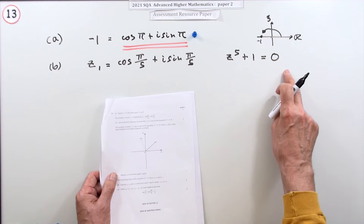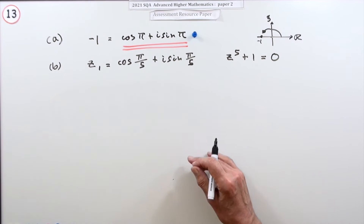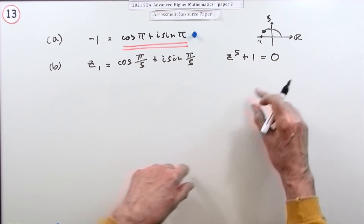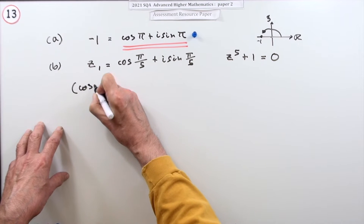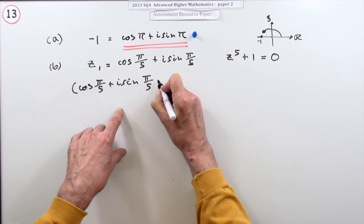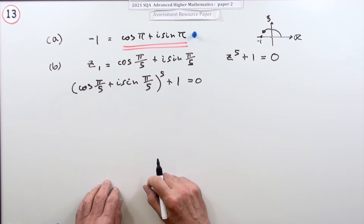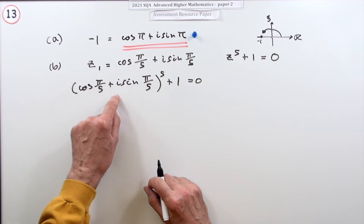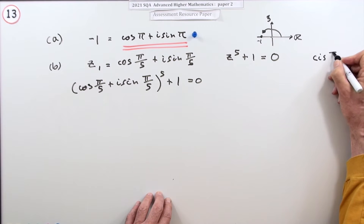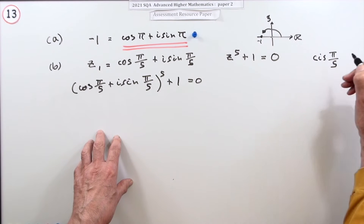You could just solve the equation and find the five roots, but first we need to show it works. If it's a root, substituting it in should give zero. Pop in cos(π/5) + i sin(π/5) to the power of five plus one equals zero. There's a shorthand — instead of writing cos θ + i sin θ each time, you can use the abbreviation cis θ, though I'm not sure if that's allowed in the exam.